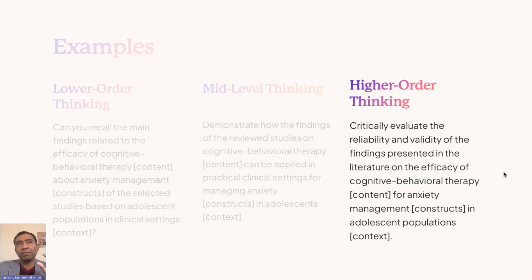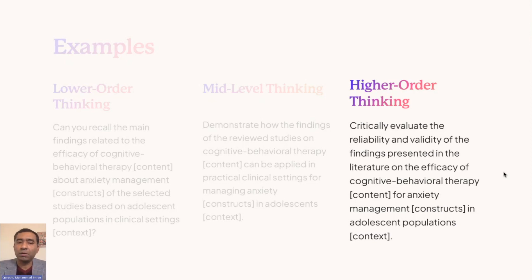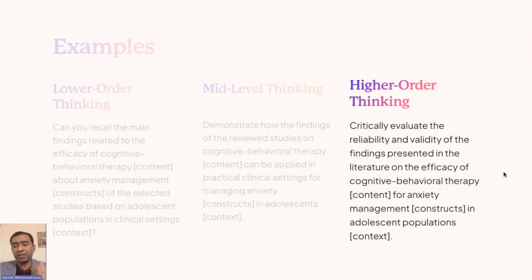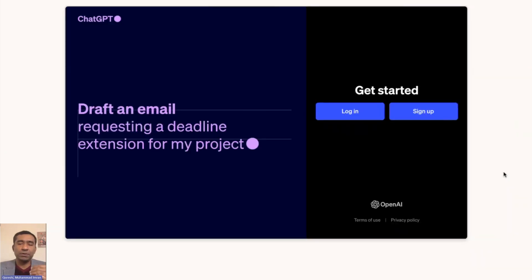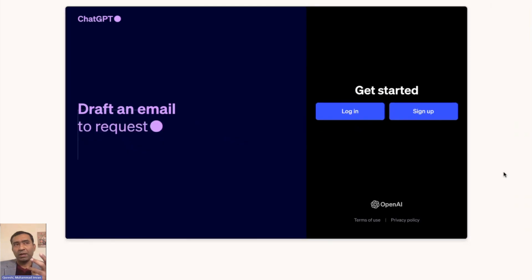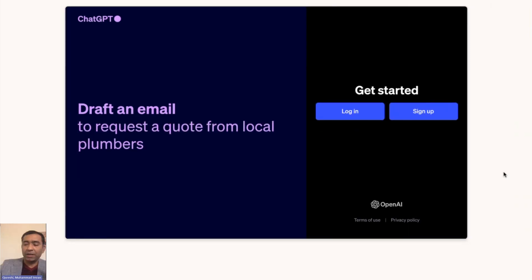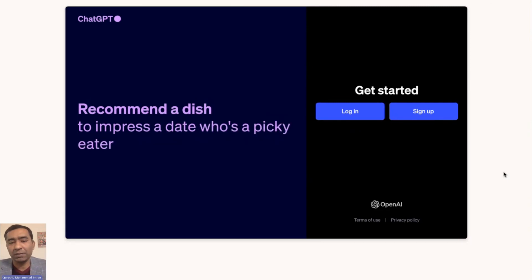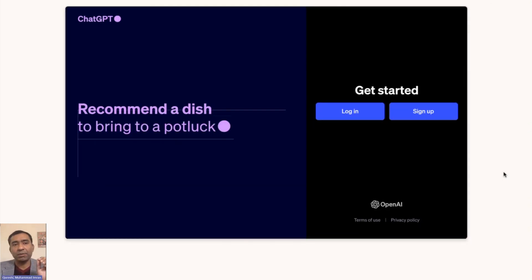For higher-order thinking, the prompt becomes: 'Critically evaluate the reliability and validity of the findings presented in the literature on the efficacy of cognitive behavioral therapy for anxiety management in adolescent populations.' The result is an evaluation — critically assessing information not just available in the literature but analyzed by AI. This is where we use these three distinct levels of thinking. In introduction we do mid-level thinking; in literature review mostly lower-order, but sometimes higher-order. Let's now start working with ChatGPT.